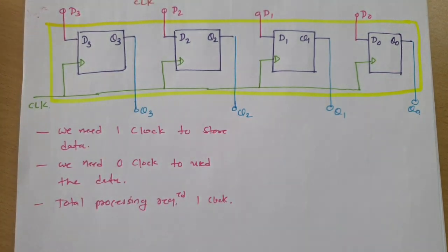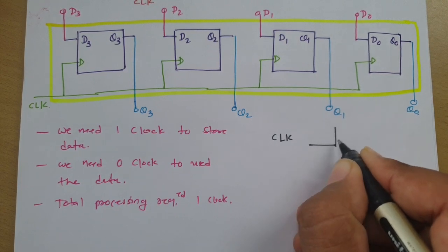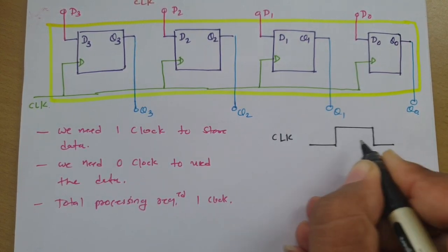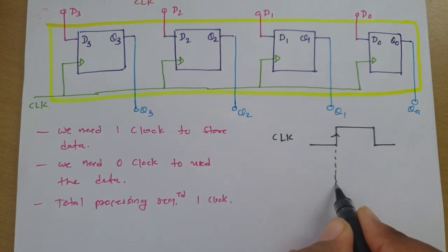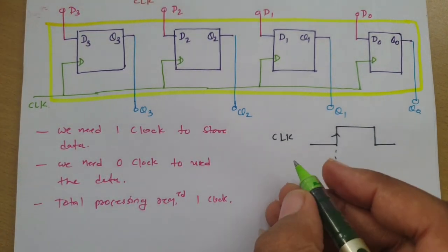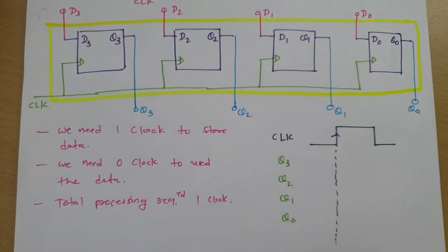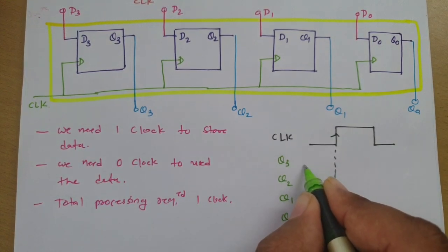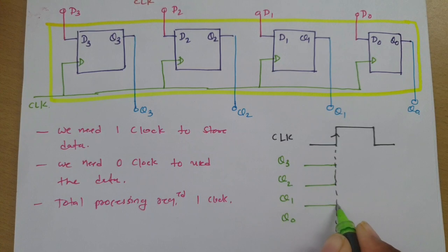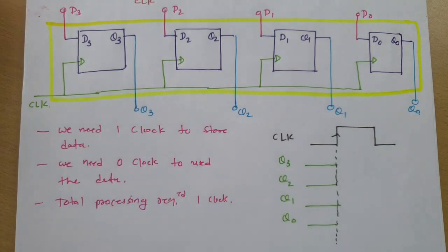If you want to understand this by waveform, let me explain with respect to the clock signal. We give the clock signal — a positive edge triggered clock — and at that instant triggering occurs. The outputs are Q3, Q2, Q1, and Q0. Initially, let's say all these are zero.